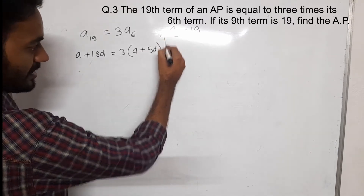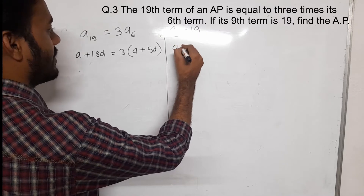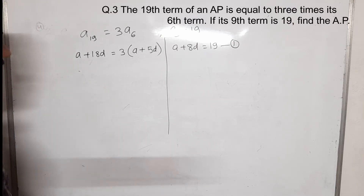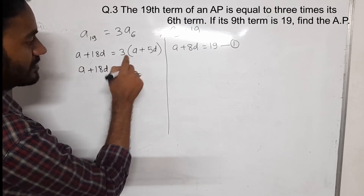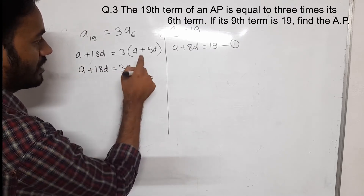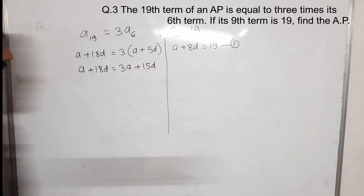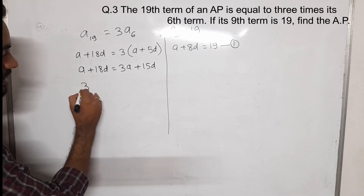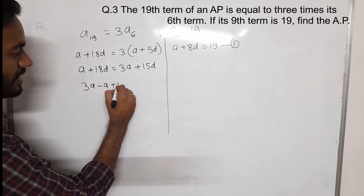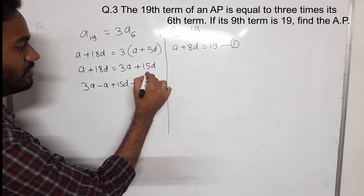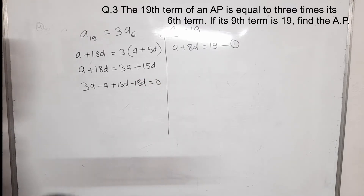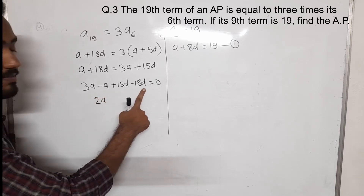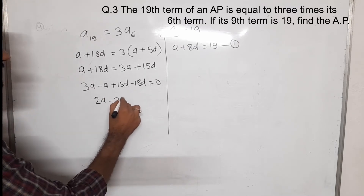One equation is formed from this, and the second equation will be A plus 8D equals 19 — we consider this equation 1. When we multiply inside the bracket it becomes 3A plus 15D. Now bringing all values to one side: 3A minus A plus 15D minus 18D equals 0, so 2A and 15D minus 18D equals minus 3D, giving 2A minus 3D equals 0.